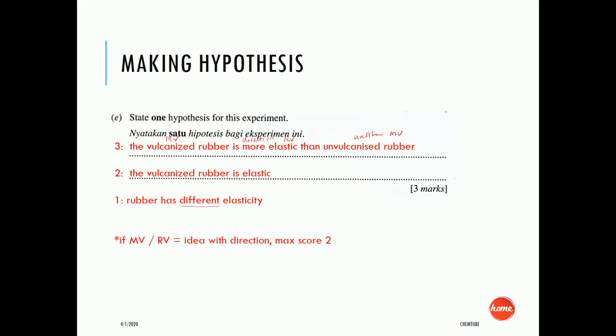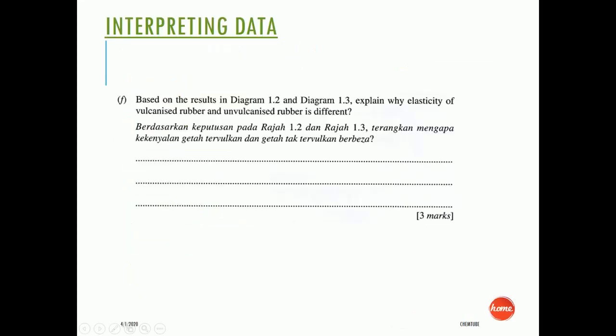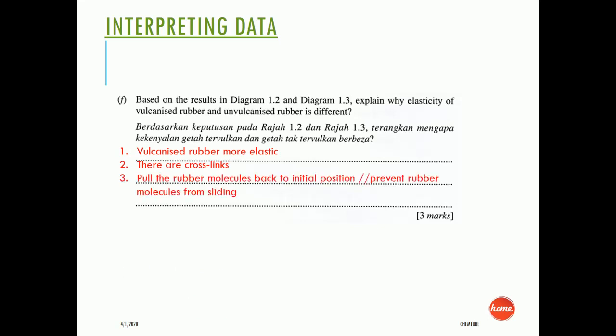For interpreting data — based on the results in Diagrams 1.2 and 1.3 — the vulcanized rubber is more elastic because it has cross-links. These cross-links pull the rubber molecules back to the initial position or prevent the rubber molecules from sliding.